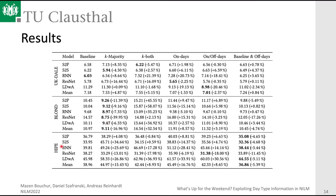For the HIPE dataset, the clear winner is the baseline-plus-off-days setup, except for the residential neural network where the on-off-days setting performs better. This indicates that a specialized off-days model is needed for this dataset. Unlike the k-majority case, we require two models here — the baseline plus the off-days model — but both are simple models trained on subsets of the data.